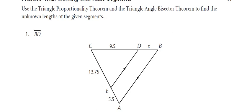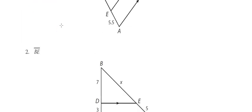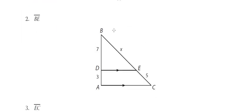Alright, so we're looking at page 147 here and for these ones I'm just going to give you the answers, and you're going to email me if you have any questions. So for the first question, line segment BD, we get a value of x equal to 3.8. Then we found line segment BE, which was the value of x, so we get x equal to 11 and 2 thirds.